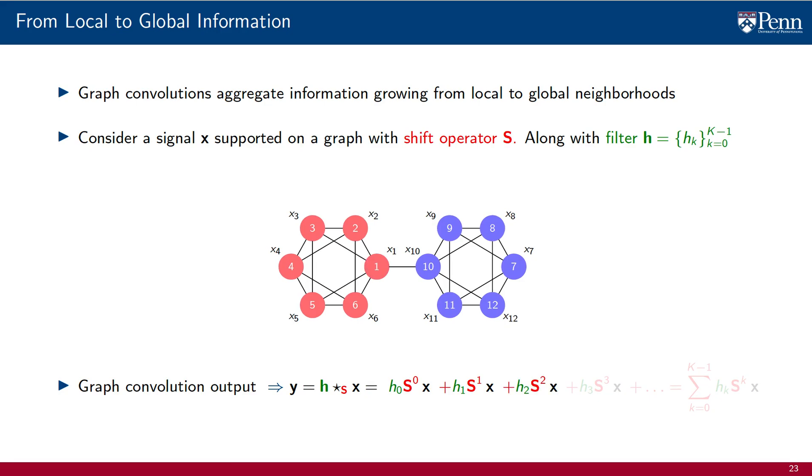To the resulting sum, we add the product of S raised to the power of 2 with x scaled by coefficient h_2. This represents a diffusion of the diffused signal. Adding this term to the convolution results in the value at node 4 being affected by all of its two-hop neighbors.